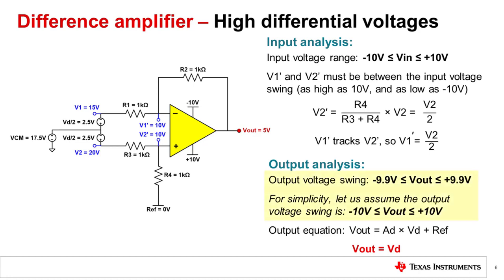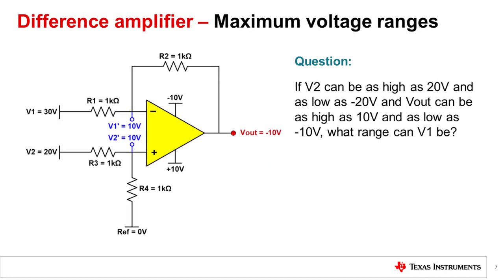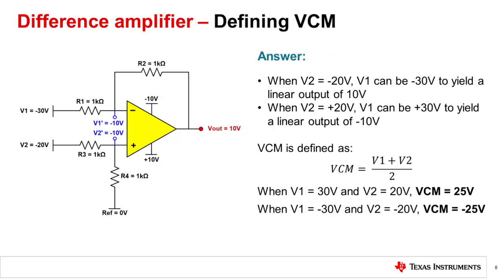Let's now analyze the output. The output of this amplifier is also rail-to-rail, but because of the limitations of the internal transistors, this swing can only go near the rail. For simplicity, let's say the output swing is negative 10 volts to positive 10 volts. The output equation is Vout equals AD times VD plus ref. The gain of this configuration is 1 V/V, and we have grounded the reference pin, so Vout equals VD. Vout and the differential voltage must be between negative 10 volts and positive 10 volts. V2 can range from negative 20 volts to positive 20 volts and still remain linear. If V2 is 20 volts, V1 can be as high as 30 volts; if V2 is negative 20 volts, V1 can be as low as negative 30 volts, and we'd still achieve linear input and output behavior.